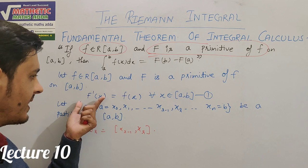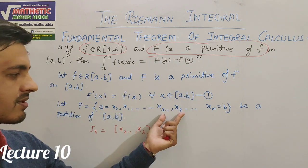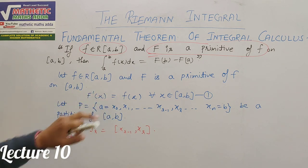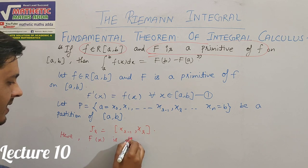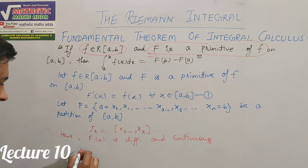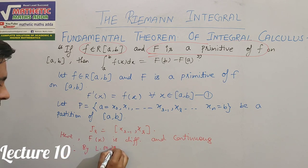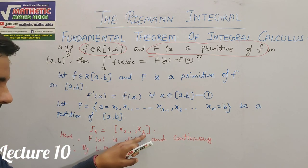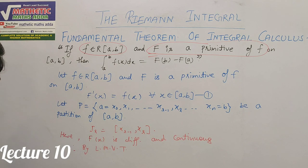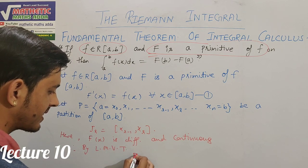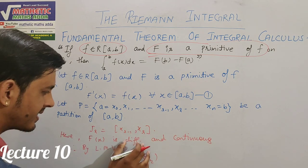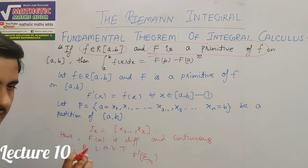If capital F is differentiable on the entire closed interval, it will also be differentiable on each sub-interval, since those are sub-intervals of it. Here, the differentiation of capital F equals small f, so F(x) is differentiable and therefore also continuous on the sub-interval. Therefore, by Lagrange Mean Value Theorem — which states that if a function is differentiable and continuous on an interval, there exists a value ε_r between x_{r-1} and x_r such that the differentiation of capital F at ε_r equals F(b) minus F(a) over b minus a.